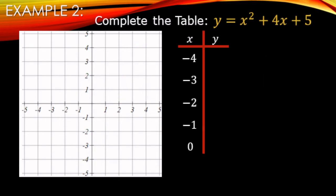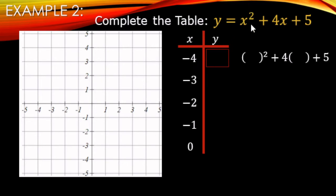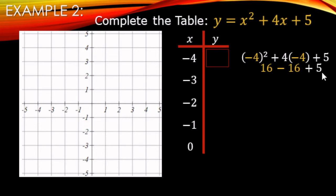Another example: we're going to fill out the table and graph using the equation y = x² + 4x + 5. For x = negative 4, replace both x's with negative 4. Exponents first: negative 4 squared is positive 16. Then 4 times negative 4 is negative 16, plus 5. Working left to right: 16 minus 16 is 0, plus 5 makes positive 5. So x = -4 corresponds to y = 5.